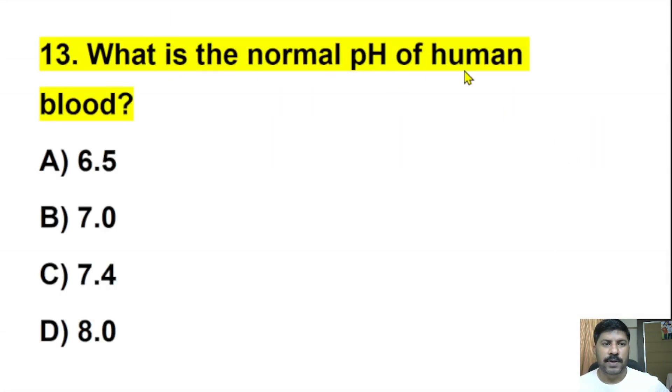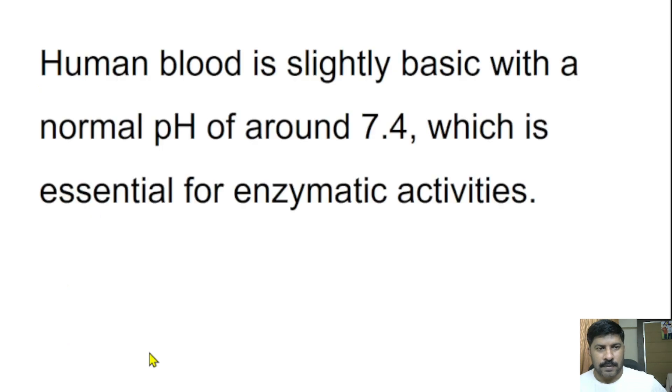Thirteenth question: What is the normal pH of human blood? 6.5, 7, 7.4, or 8.0? The correct answer is 7.4. Human blood is slightly basic with a normal pH of around 7.4. The pH level 7 is neutral. 7.4 means it is slightly basic or in an alkaline condition, which is essential for enzymatic activities.